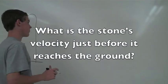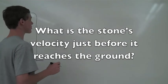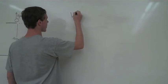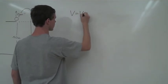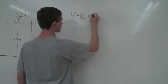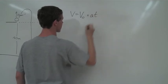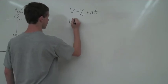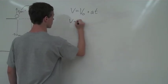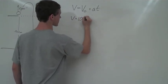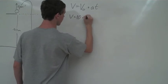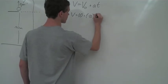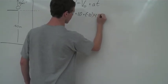The next question is: what speed does the stone have just before hitting the ground? To solve this, we'll use the equation: final velocity equals initial velocity plus acceleration times time. The values are: initial velocity equals 10 meters per second, acceleration due to gravity equals negative 10, and time equals 4.32 seconds from the previous result.